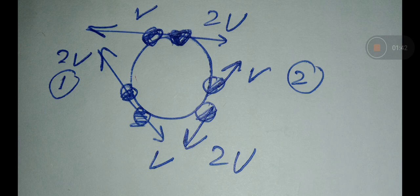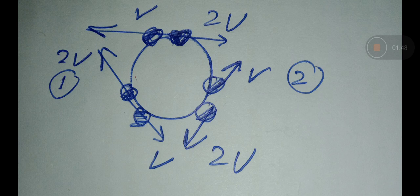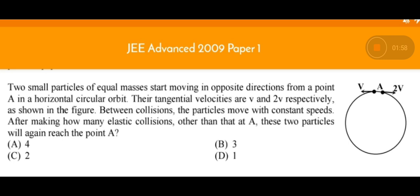Now they will move from position 2 to the initial position, which is the top position point A. So you can see after two collisions the two bodies with equal masses are returning to their original position. The answer is option C: 2.